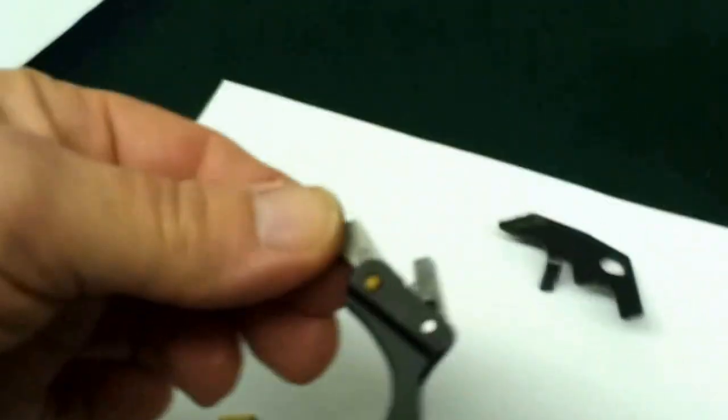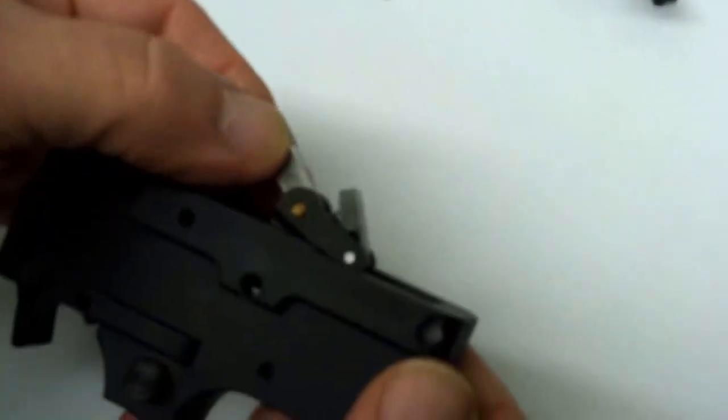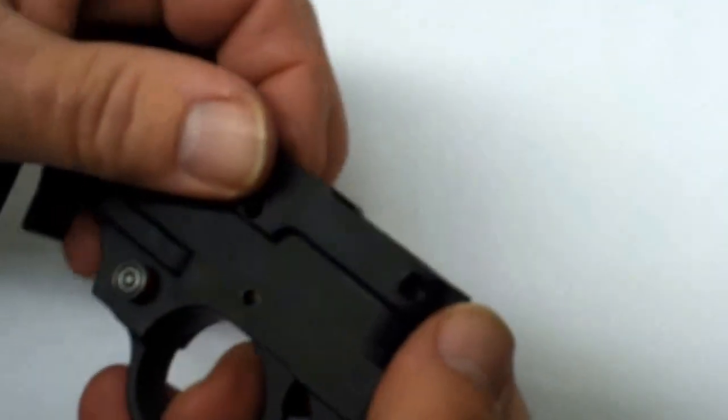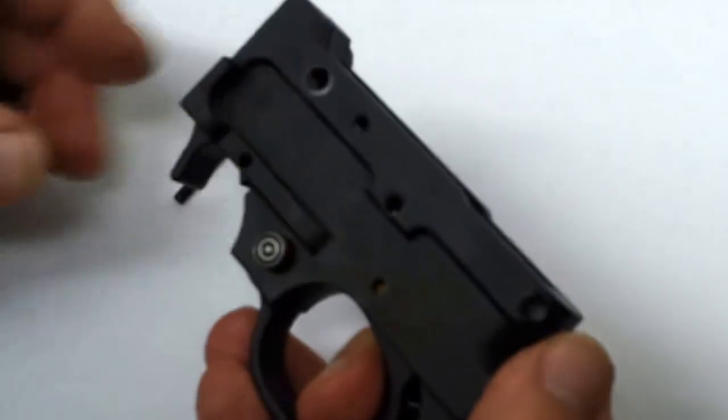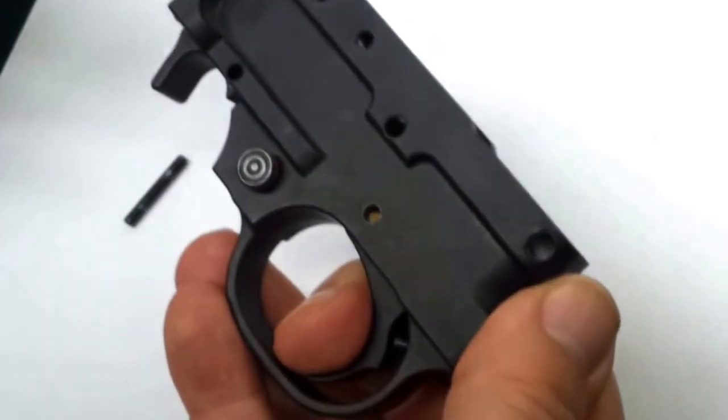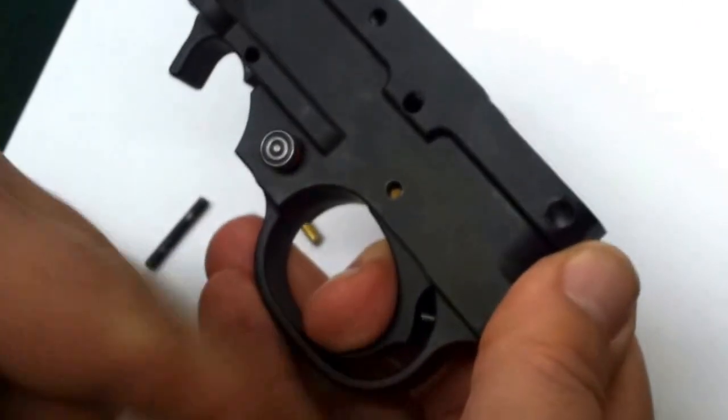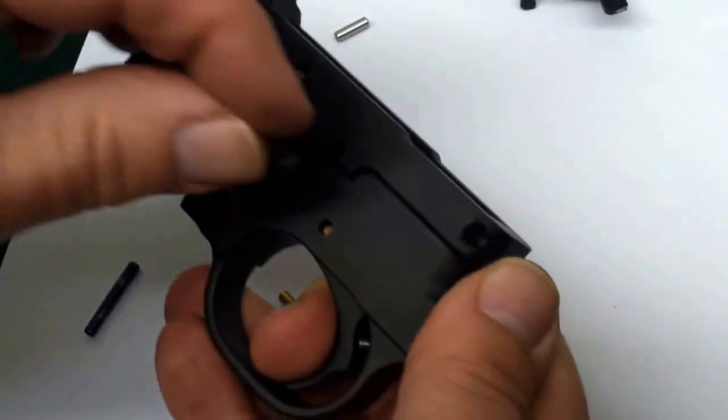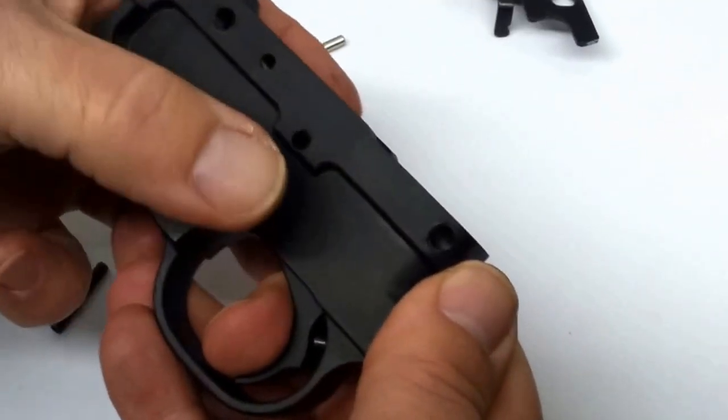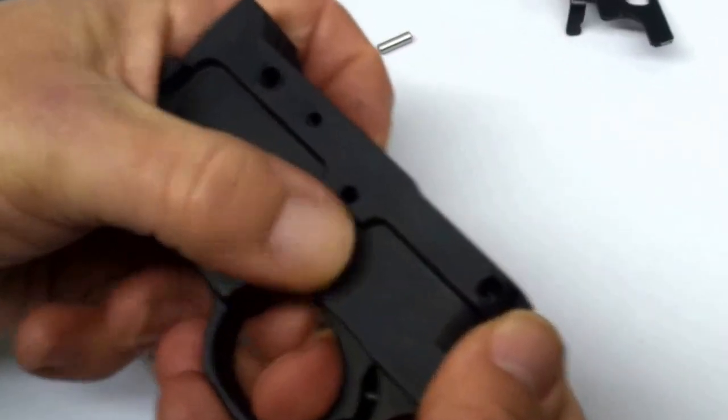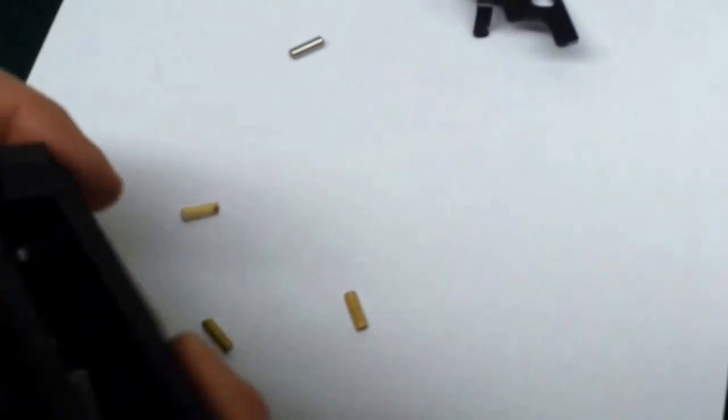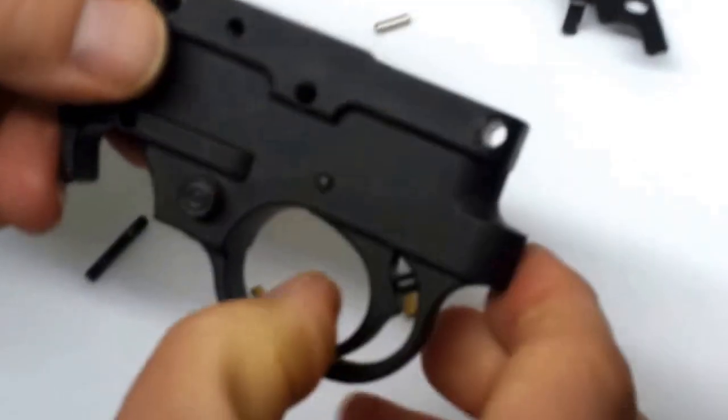So with our trigger assembly held together by the cheater pin, it's a simple matter to just insert it into the trigger housing, line up the hole. With the safety off, we press the trigger very slightly in order to make sure that hole's lined up. Pop in our actual trigger pivot pin, and the cheater pin pops right out the other side. And now we're good to go.